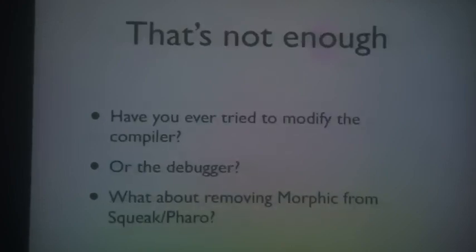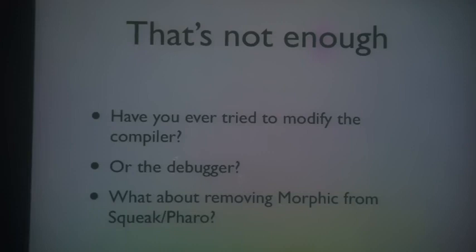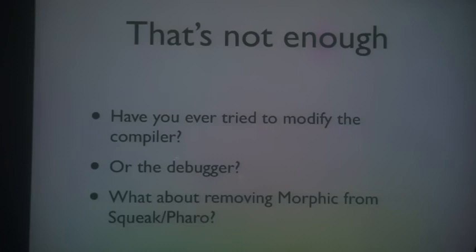The problem is that that's not enough sometimes. For example, have you ever tried to modify the compiler or change the debugger? Those are probably things people don't do every day, but when you want to do it, it's not easy. If you make a mistake when changing the compiler or debugger, it's very easy to break your system and end up with nothing — you lose all your chances. You have to go to the last backup, because saving an image is just a backup of all the state of the objects you were using.